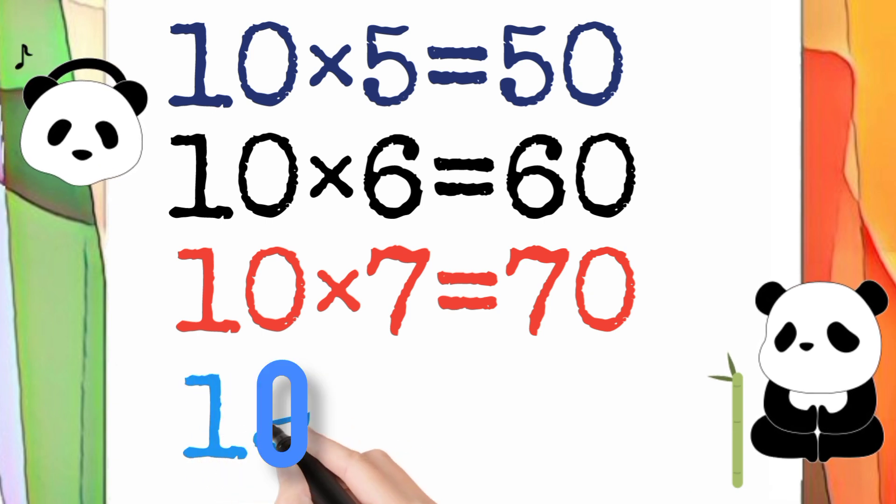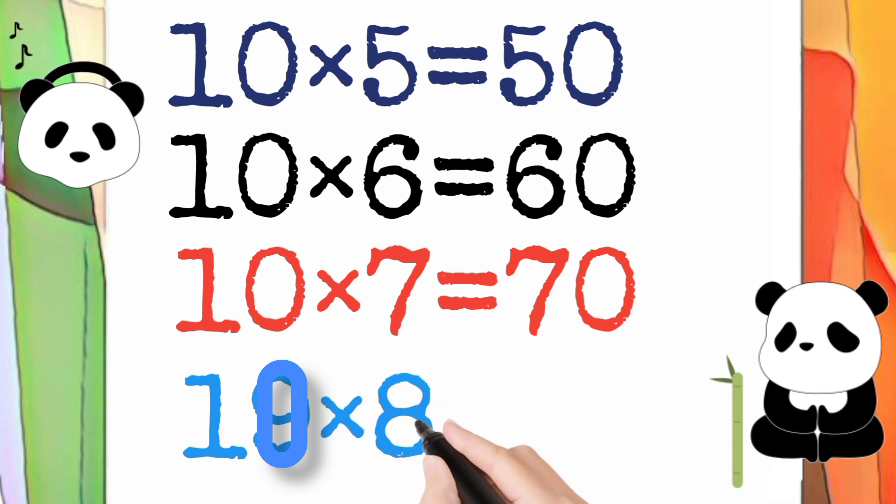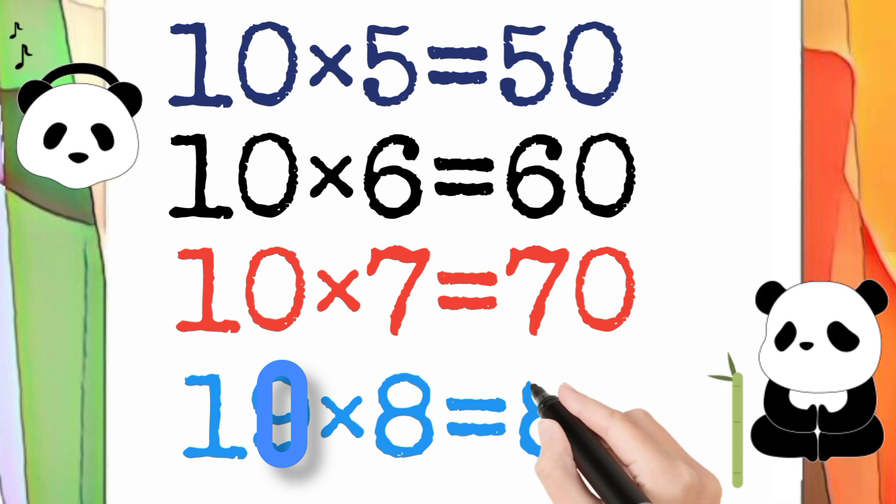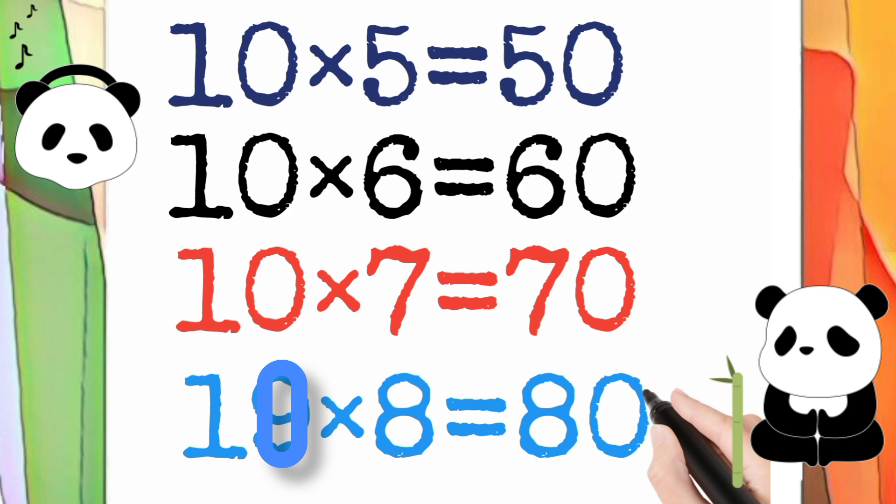10 multiply by 8 is equal to 80. So 10 times 8 equals 80.